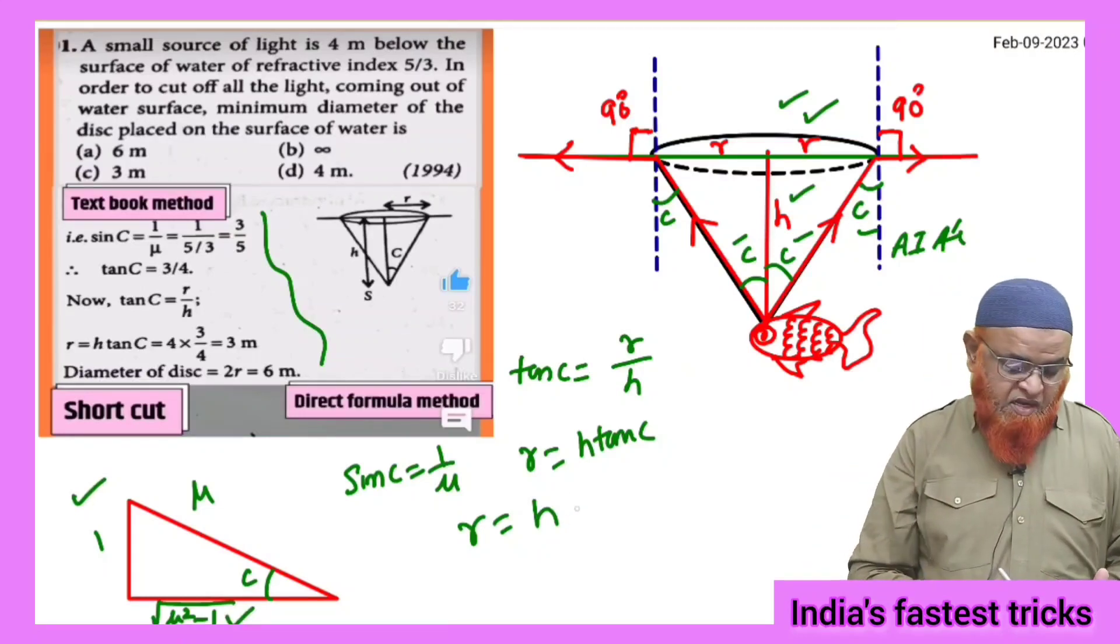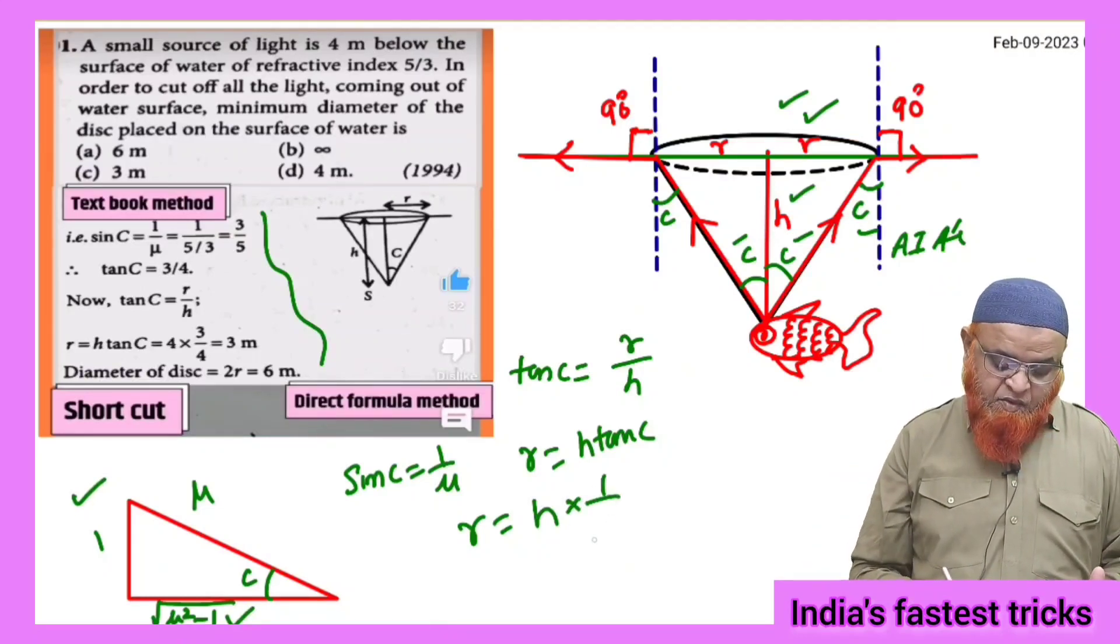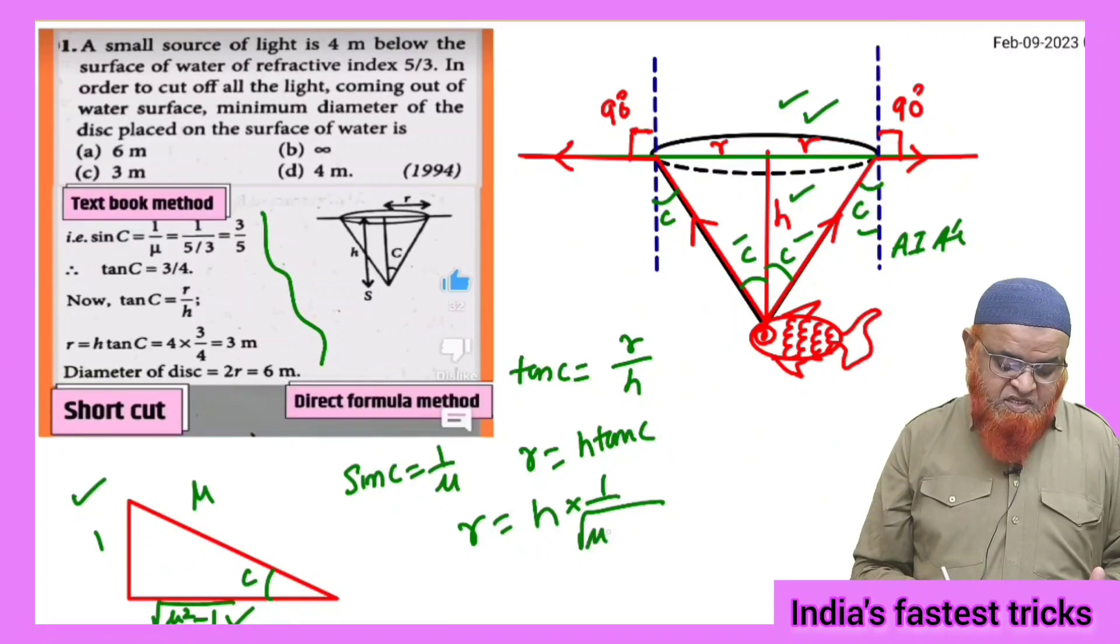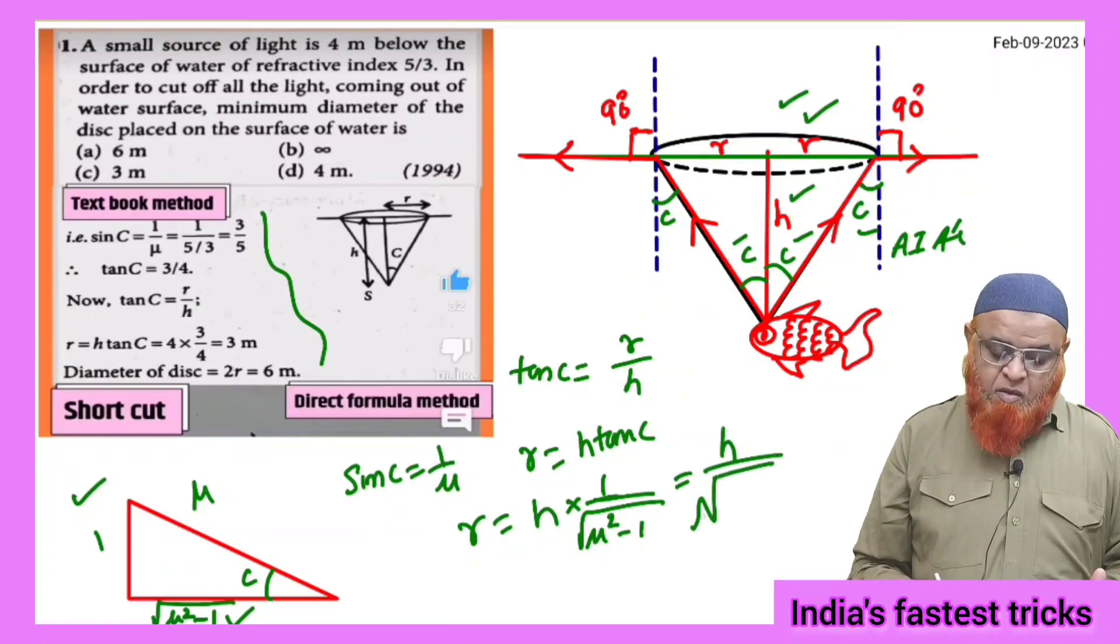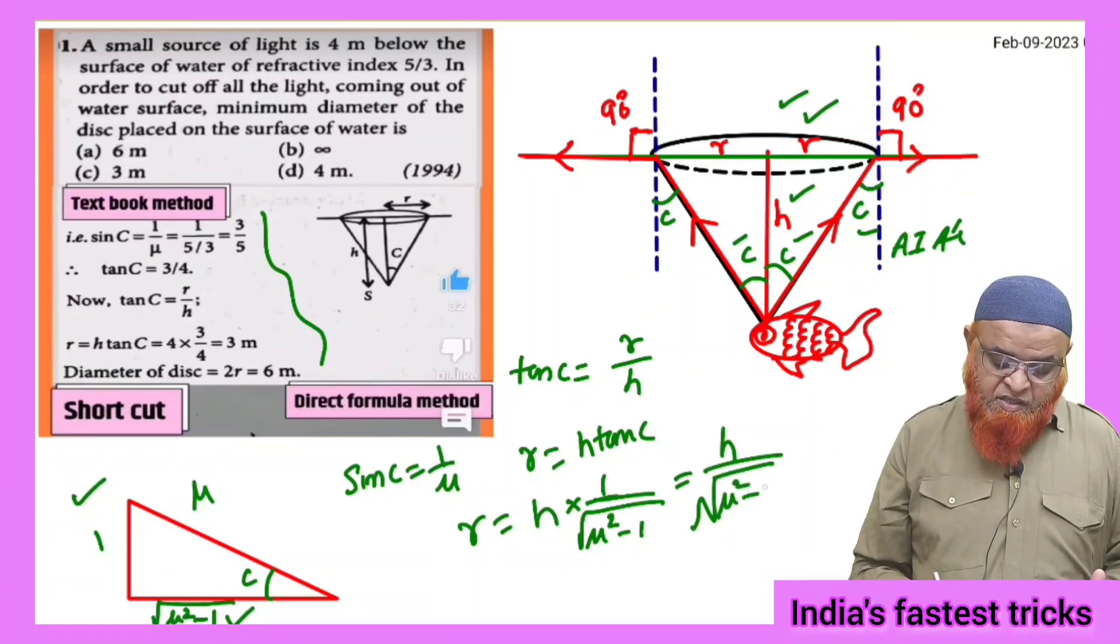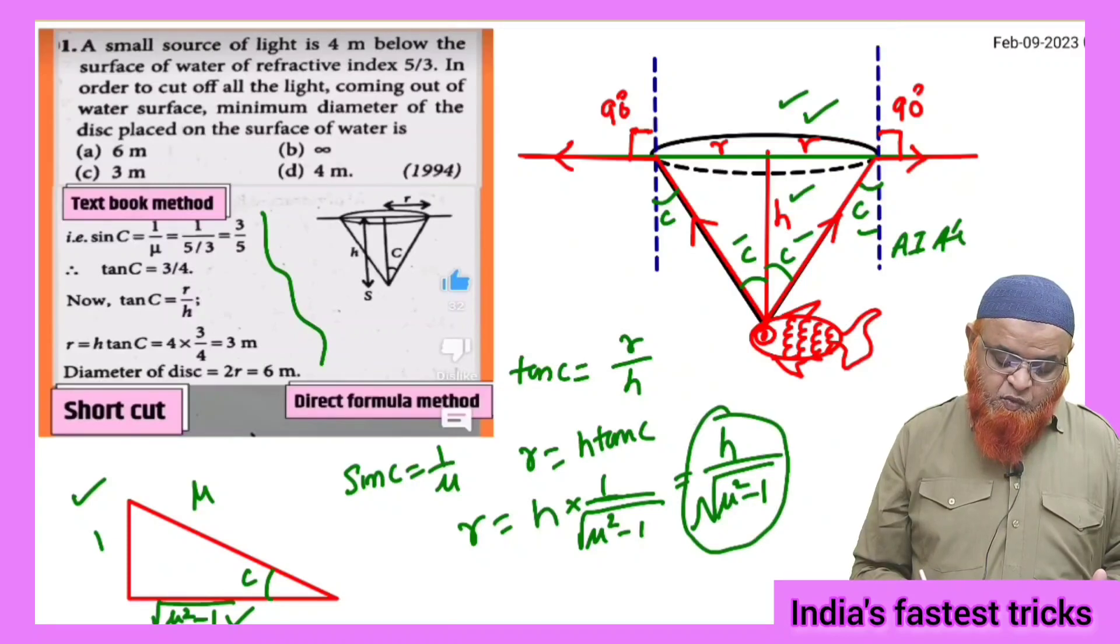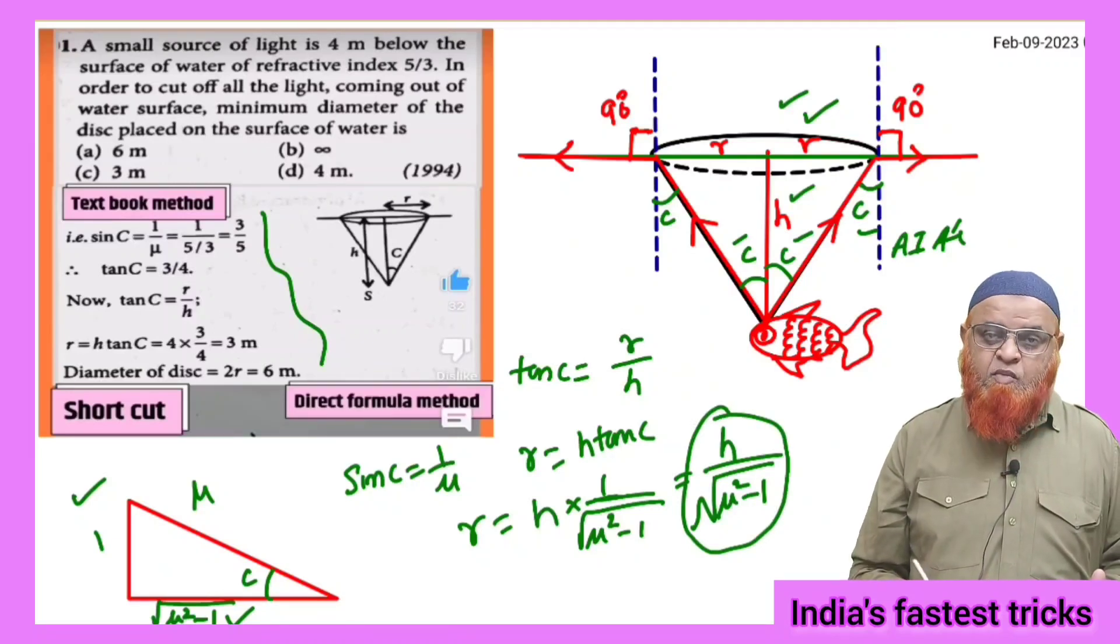Tan c is nothing but here opposite side and adjacent side which can be taken as opposite side is 1, adjacent side is square root of mu square minus 1. That's it. So we got the formula here that is H by square root of mu square minus 1 is going to be your single step formula.